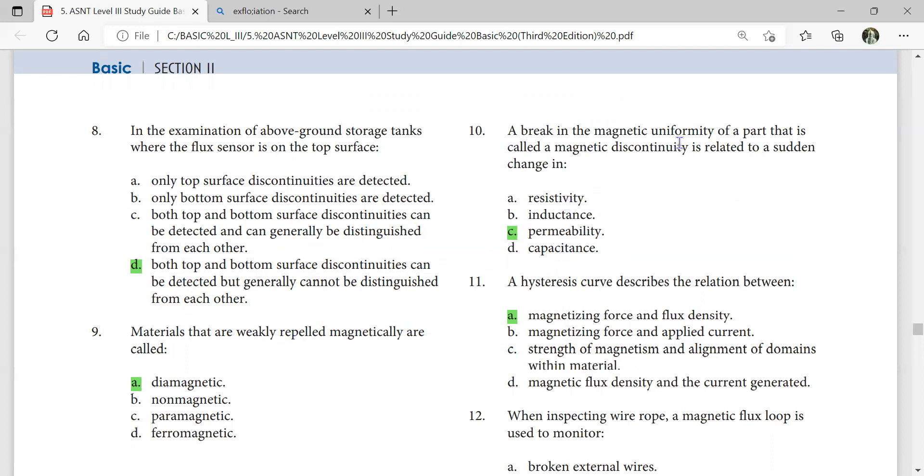The break in the magnetic uniformity of a part that is called a magnetic discontinuity is related to a sudden change in permeability.